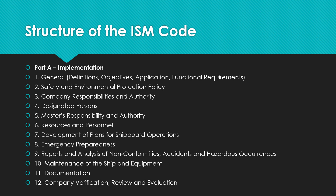For emergency preparedness, the company should establish procedures to identify, describe, and respond to potential emergency shipboard situations. Part 9 talks about reports and analysis of non-conformities, accidents, and hazardous occurrences. This includes procedures ensuring that non-conformities, accidents, and hazardous situations are reported to the company, investigated, and analyzed with the objective of improving safety and pollution prevention.